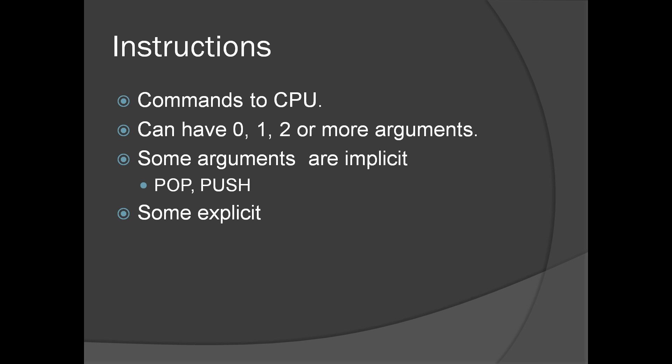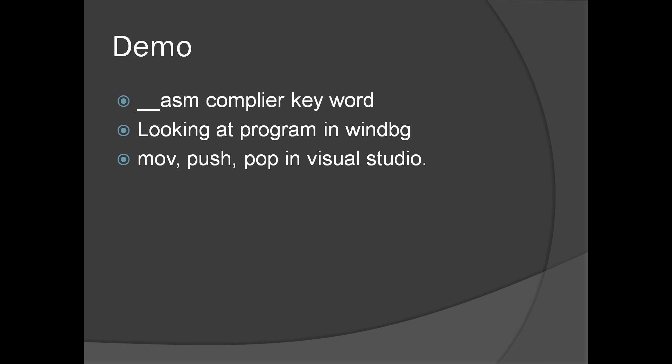Instructions are commands to the CPU. You can have mostly zero, one, or two arguments to an instruction — in very rare cases you have more arguments. Some arguments are implicit and some are explicit. For example, in the case of push, ESP or the stack pointer is an implicit argument. What we're going to do is see a demo of how to execute a simple assembly language program in Visual Studio, and we're going to look at the program in a tool called WinDebug, concentrating on move, push, and pop.